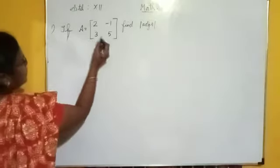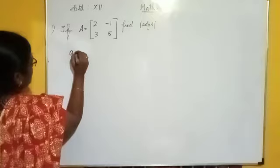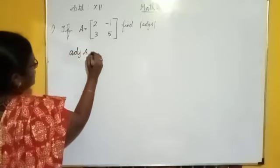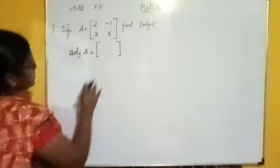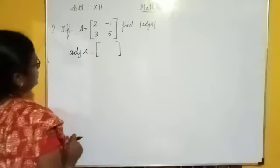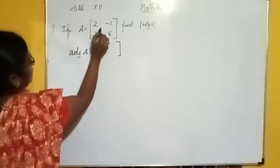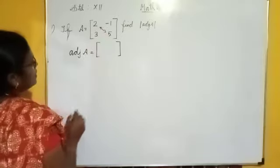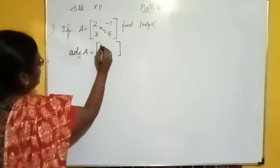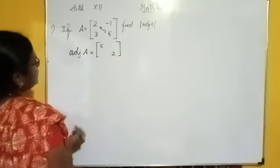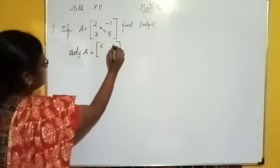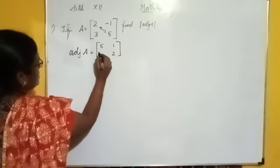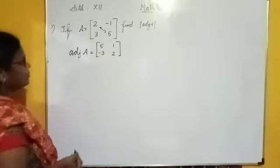For this, first we have to find the adjoint of the given matrix. For a 2 by 2 matrix, it is easy to find the adjoint. You have to interchange the main diagonal elements: 5, 2, and change the sign of the remaining elements. Minus 1 changes to plus 1, and plus 3 changes to minus 3.